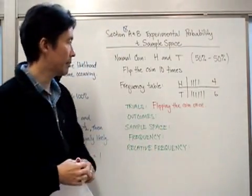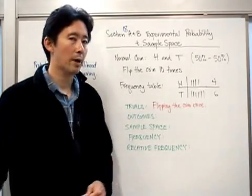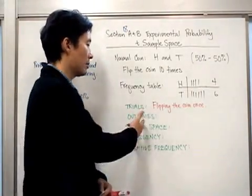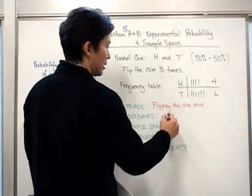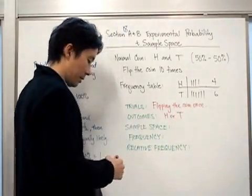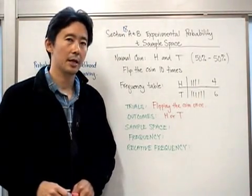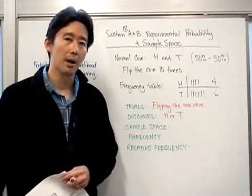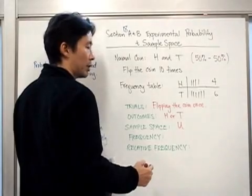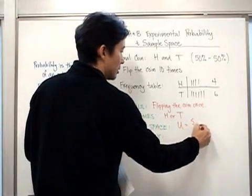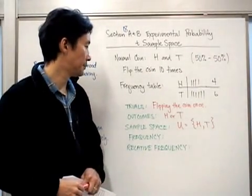If we think of flipping the coin as an experiment, then we perform the experiment once — and that's what we refer to as a trial. The outcomes are what actually come out as a result of the trials. In this case, we have either heads or tails — those are the only two possible outcomes. The sample space is a listing of all possible outcomes, so the sample space, written as a capital U for the universal set, equals {heads, tails}.